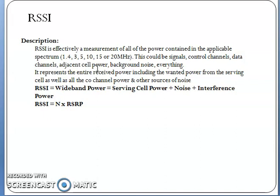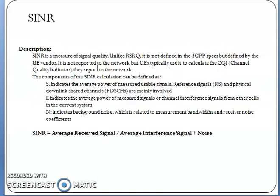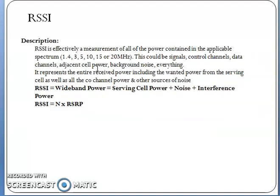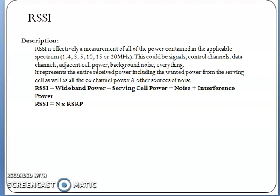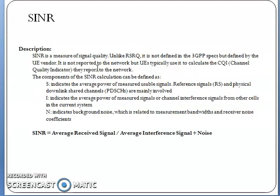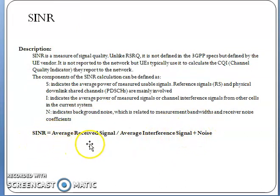Next is SINR — Signal to Interference Noise Ratio. One important point: RSRP, RSRQ, and RSSI are all 3GPP standards, but SINR is not a 3GPP standard — it is defined by UE vendors. SINR is calculated as: average received signal divided by (average interference signal plus noise). That is the signal-to-interference-noise ratio.